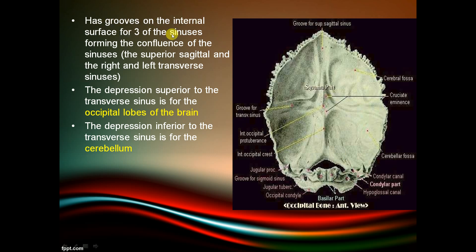The occipital bone has grooves on its internal surface forming the confluence of sinuses — the superior sagittal and the right and left transverse sinuses. The depression superior to the transverse sinus is for the occipital lobes of the brain, and the depression inferior to it is for the cerebellum — the cerebellar fossa.